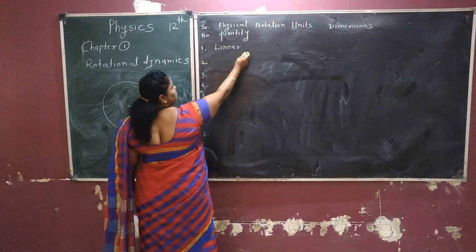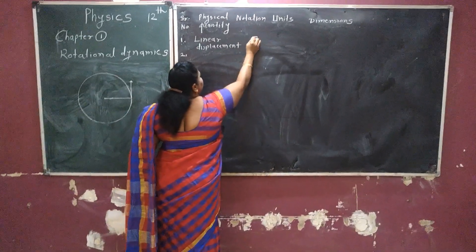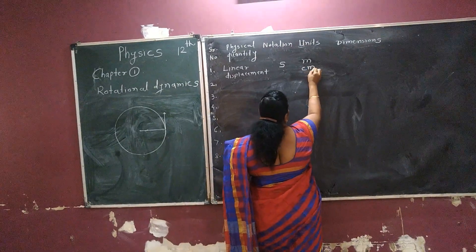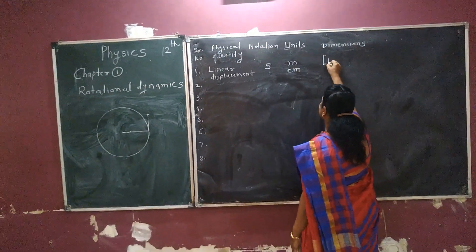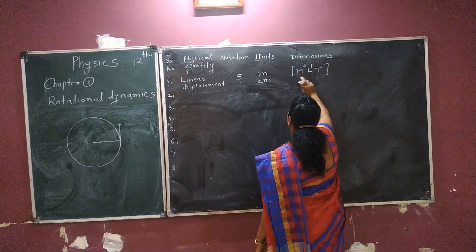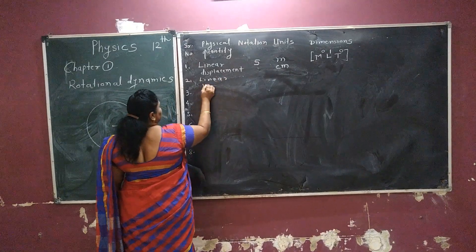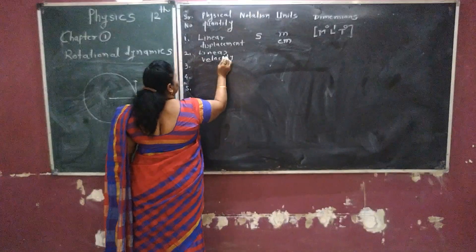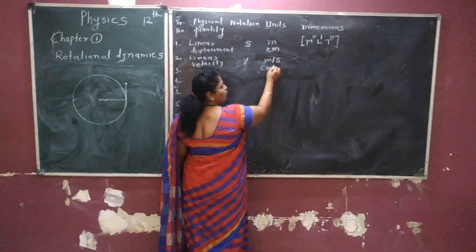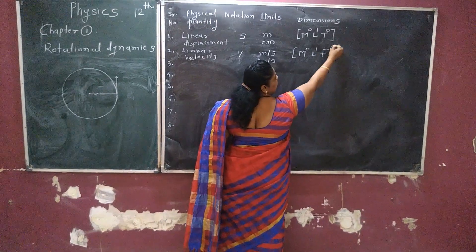The first quantity in the chart is linear displacement. Linear displacement is denoted by S. Its unit is meter in the MKS system and centimeter in the CGS system. Its dimension is M⁰, L¹, T⁰ — meaning no mass, length to the power one, and no time. The second quantity is linear velocity, denoted by V. Its unit is meter per second in the MKS system, centimeter per second in the CGS system. Therefore its dimension is M⁰, L¹, T⁻¹.